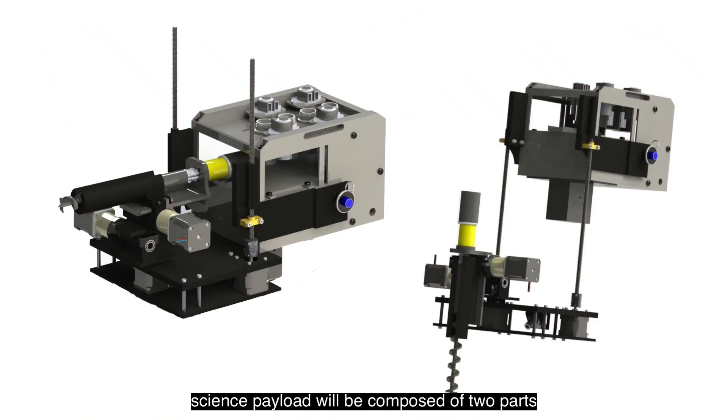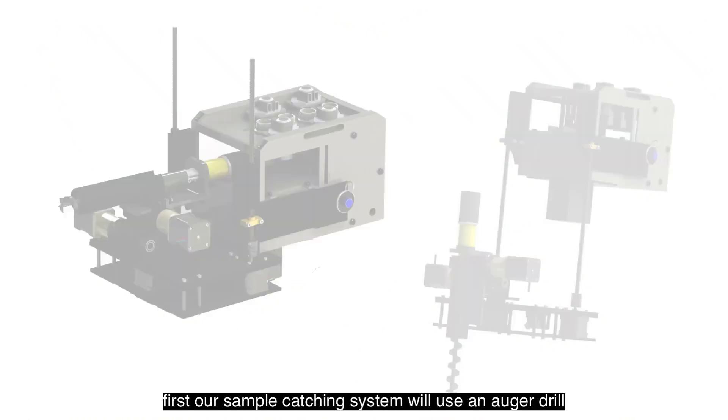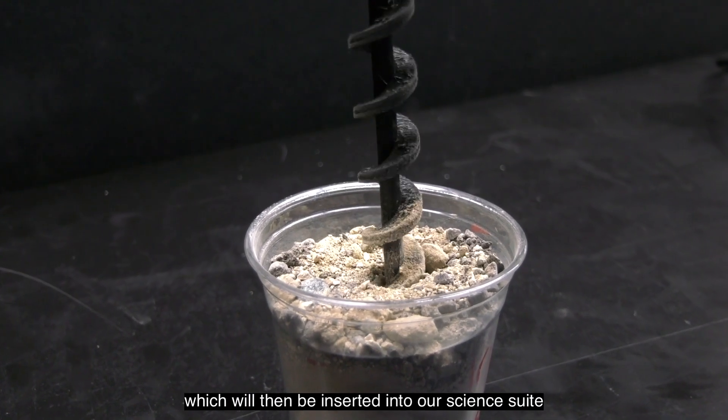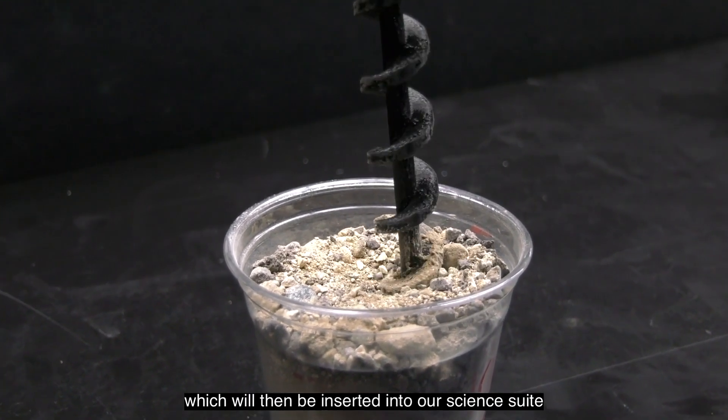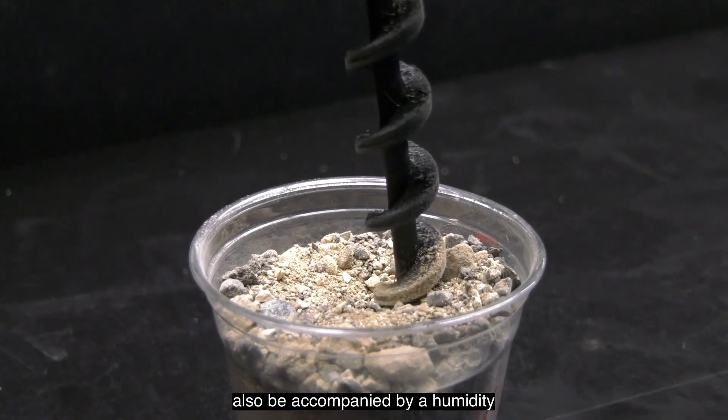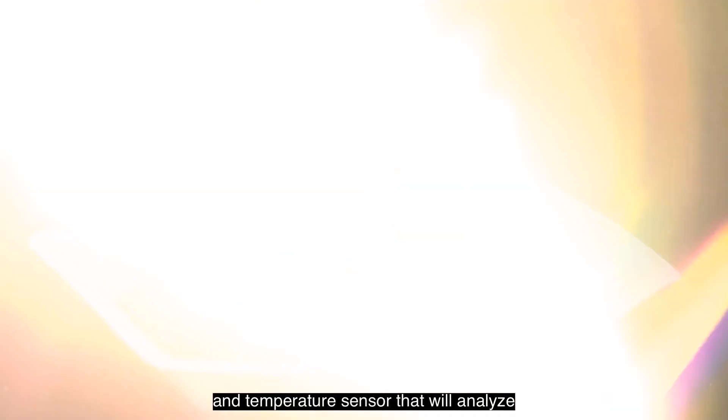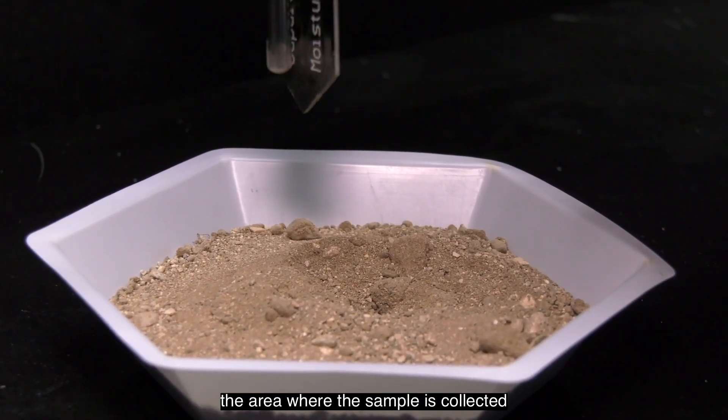Our science payload will be composed of two parts. First, our sample catching system will use an auger drill to collect a soil sample which will then be inserted into our science suite. The sample catching system will also be accompanied by a humidity and temperature sensor that will analyze the area where the sample is collected.